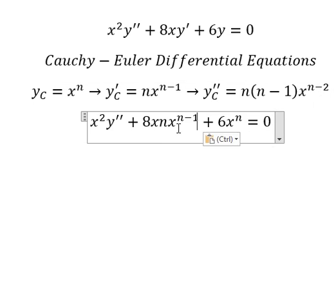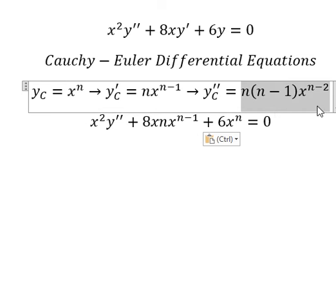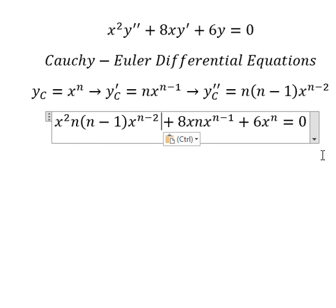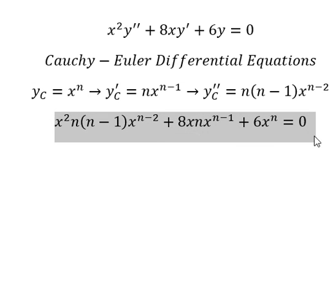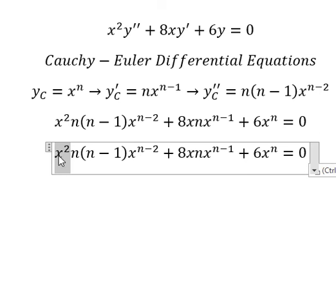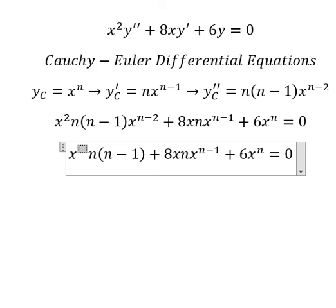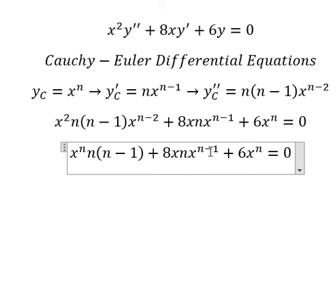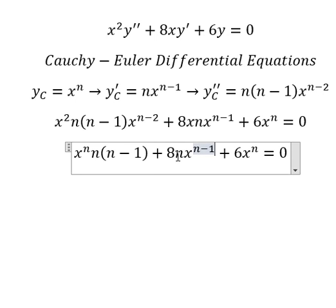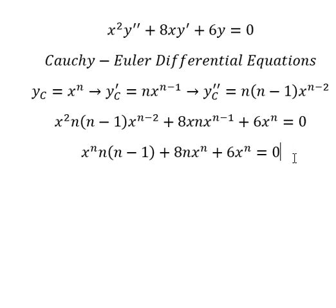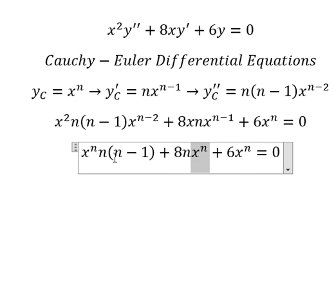We know that x squared times x to the power of n minus 2 gives x to the power of n. Similarly, x times x to the power of n minus 1 also gives x to the power of n. So we now have x to the power of n throughout, and we can use factorization.